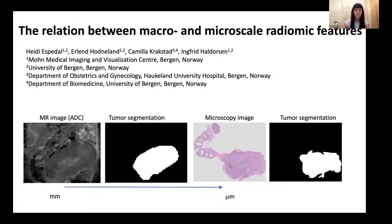In this project, we have looked at the relation between macro and microscale radiomic features. At the macro scale, we looked at ADC images generated from mice implanted with orthotopic endometrial cancer. After manual tumor segmentation, we extracted radiomic features that we compared to the microscopy images taken from the tumors straight after the mice were sacrificed. We then look at possible correlations between the radiomic features extracted from either the tumor microscopy or from the ADC image. Please visit our poster for more discussion about our results.